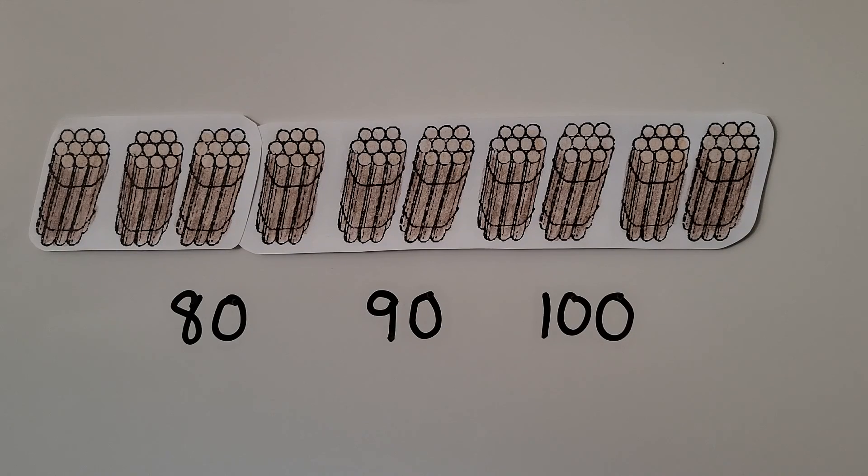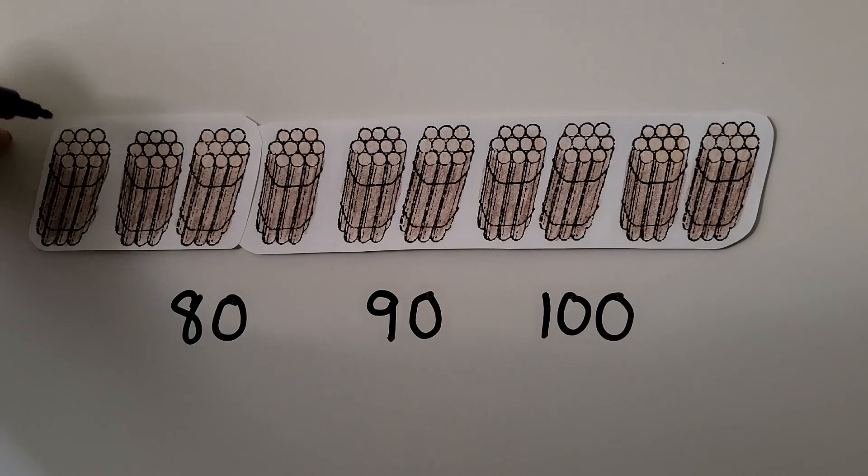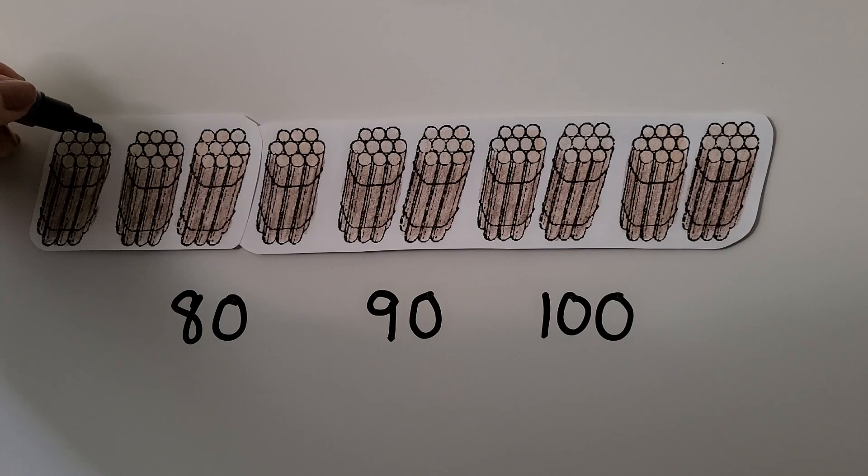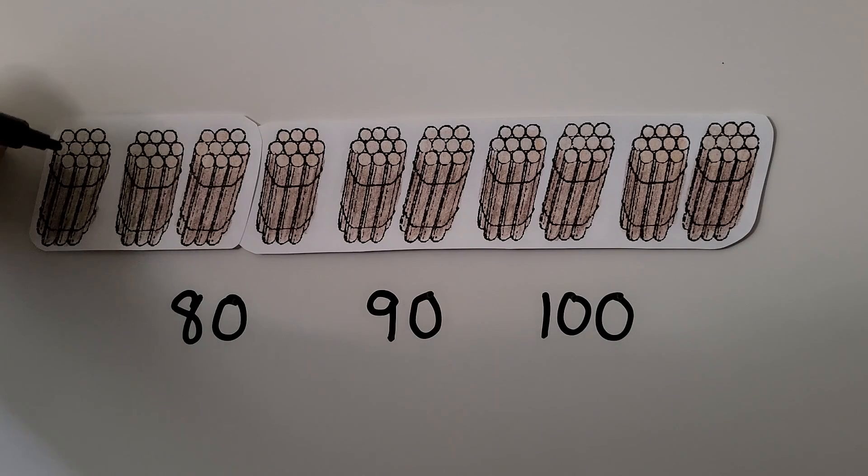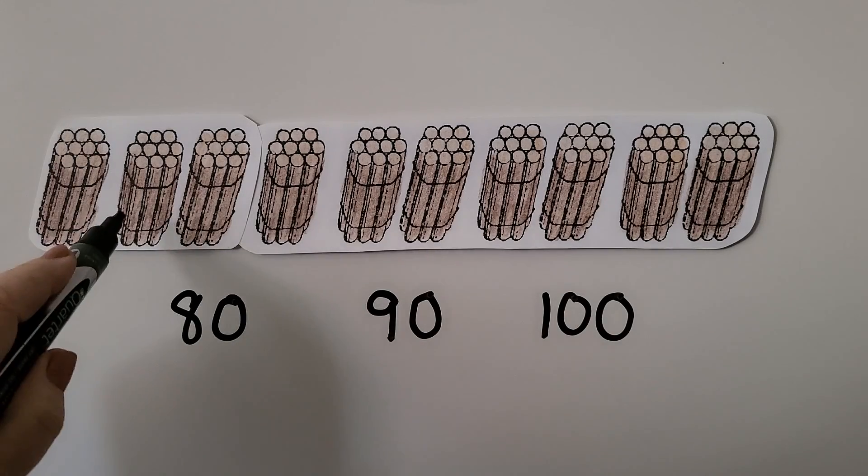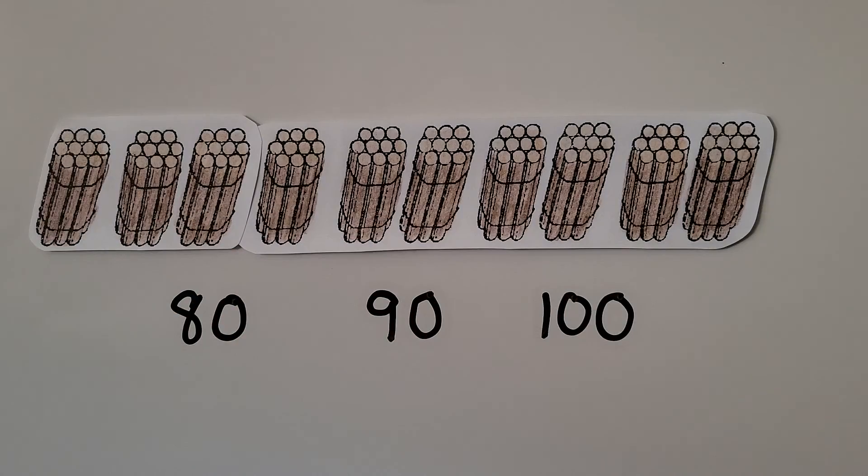Here we have bundles of sticks. Each bundle has 10 sticks. We can count them. There's 1, 2, 3, 4, 5, 6, 7, 8, 9, 10. Each bundle has 10. And we can count how many sticks there are in all by counting by tens.